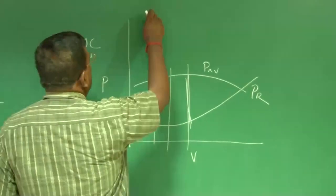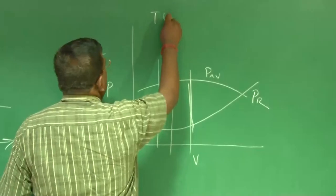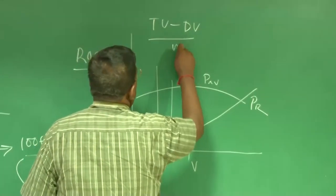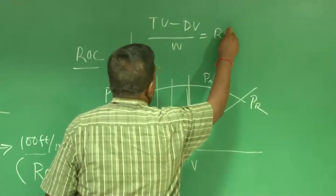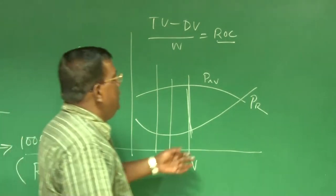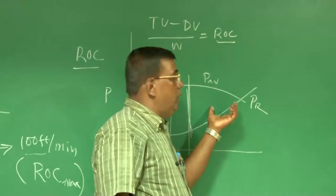Because, I know, Tv minus Dv by W is equal to rate of climb. But, the assumption is, I am climbing with a constant speed. And also, I know that, when I am calculating power required, I am taking it as if it is cruising.